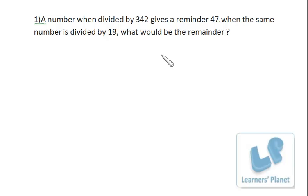A number when divided by 342 gives a remainder 47. When the same number is divided by 19, what would be the remainder? Though I have explained this concept many times, once again we'll go for a quick recap.